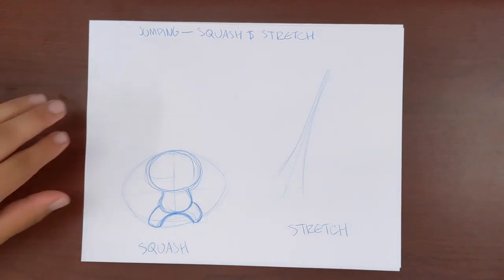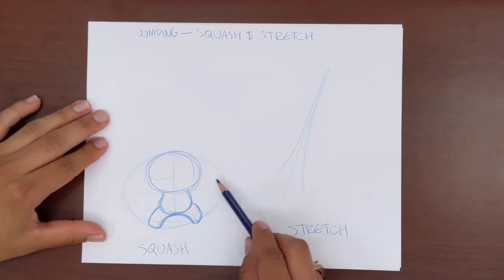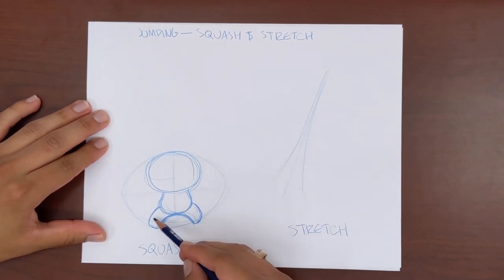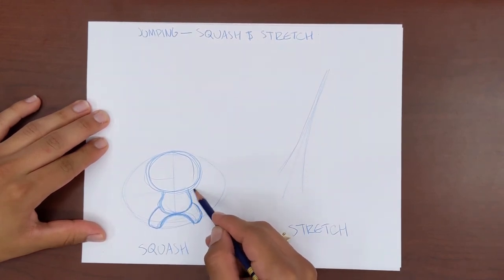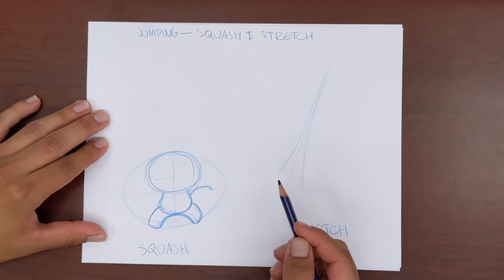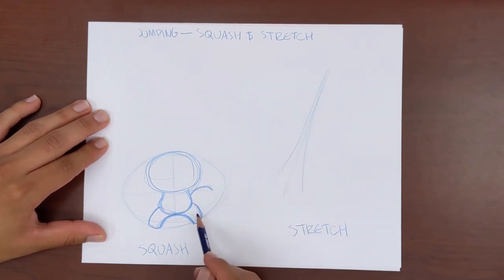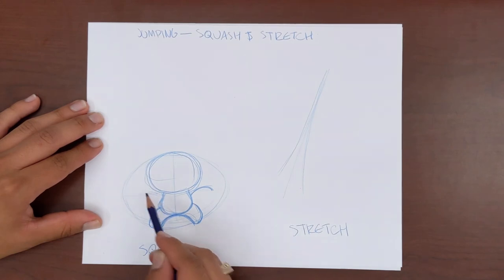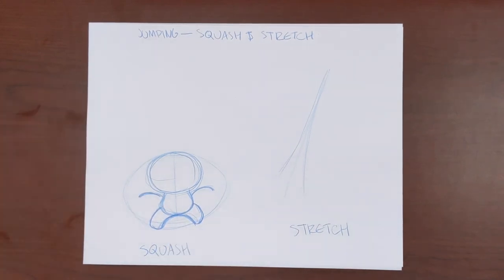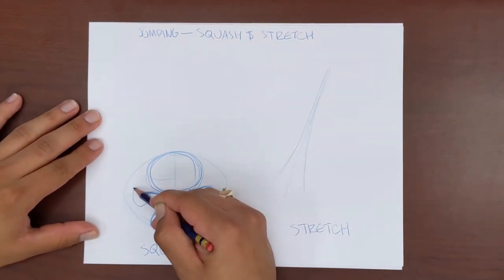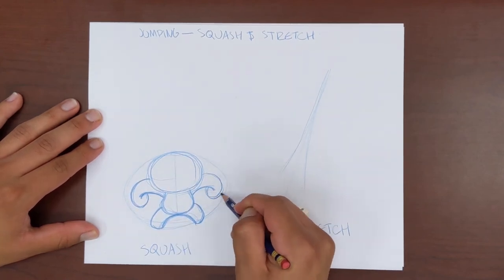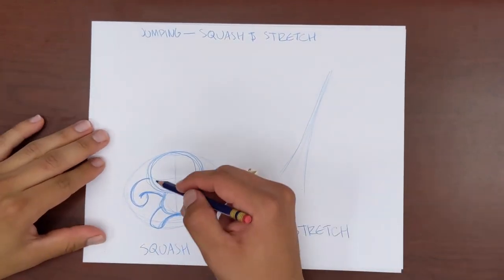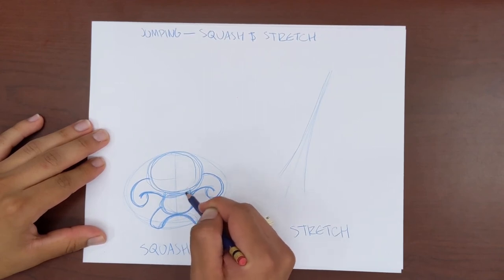For our character's arms, we can draw them like our character is bending them, tucking them in as well. We can loosely follow the lines for our legs to help illustrate their arms. Their arms will also be partially hidden by their head in this squashed position from being bent over. We now have pose one of our squash and stretch animation to show our character jumping.